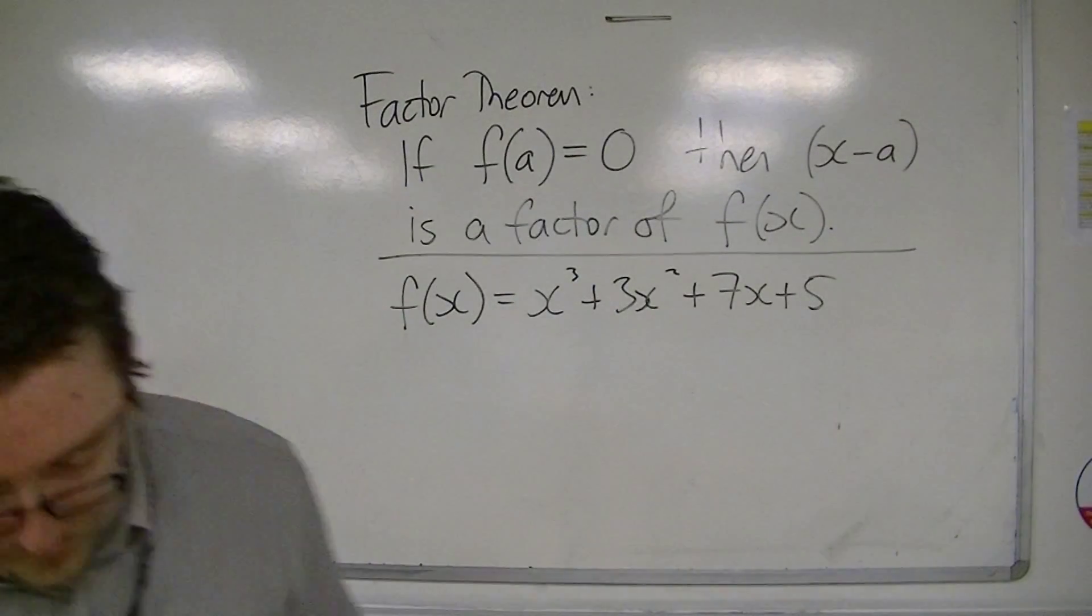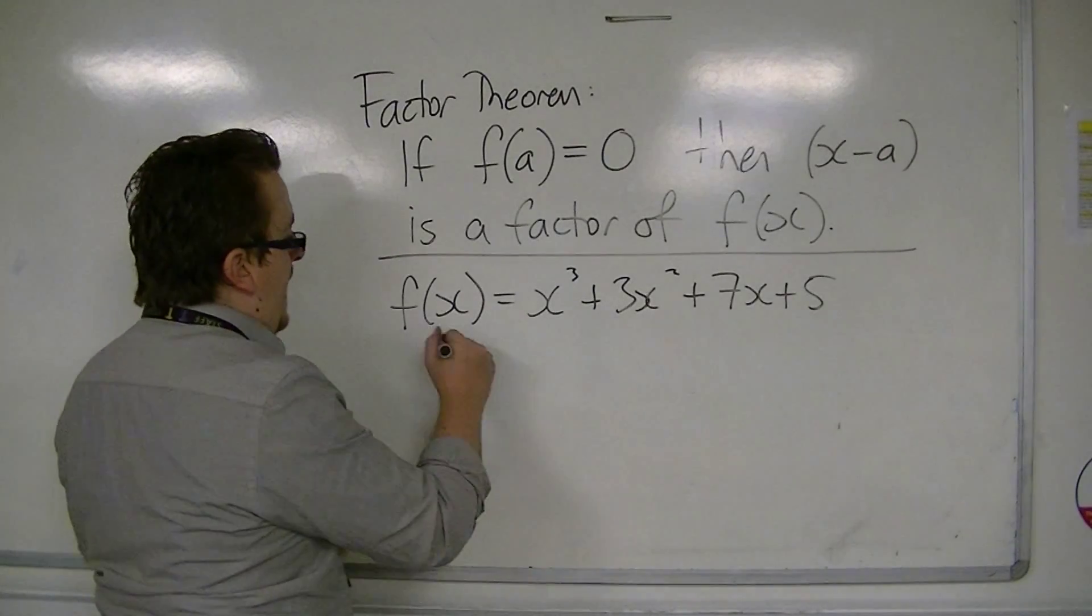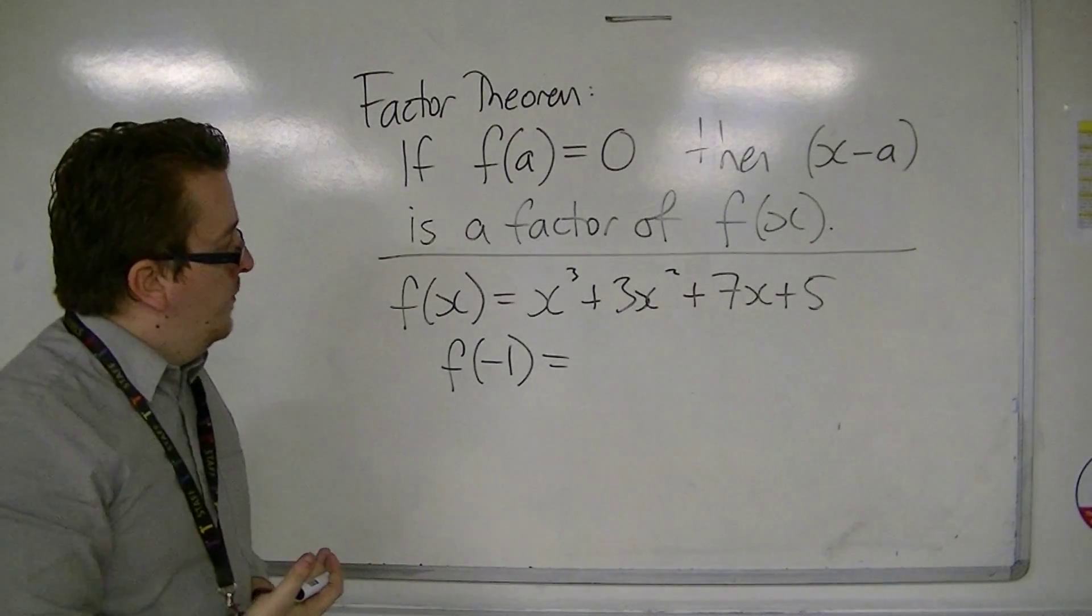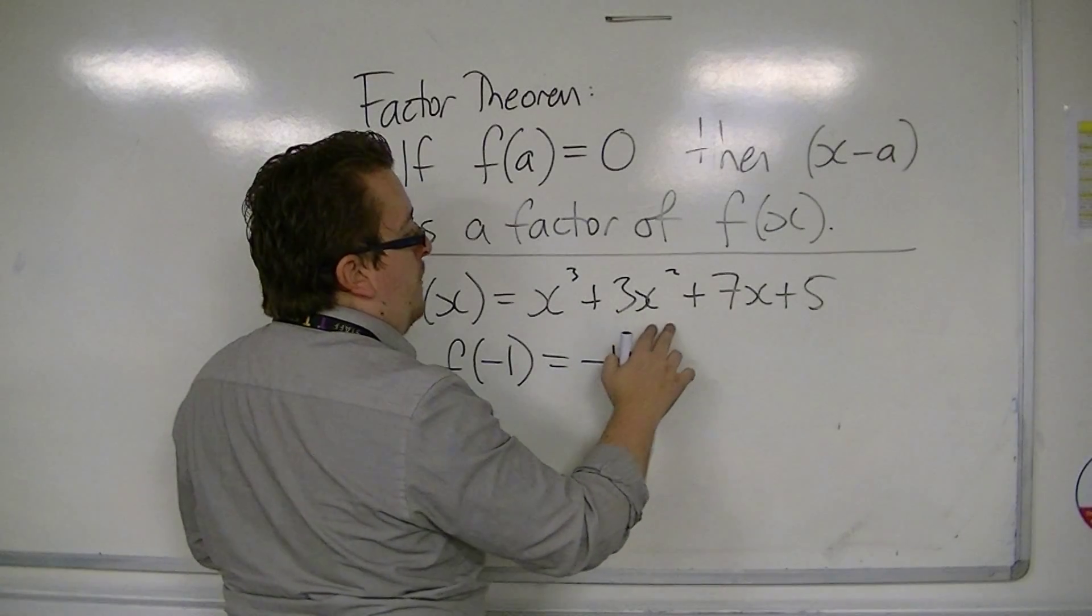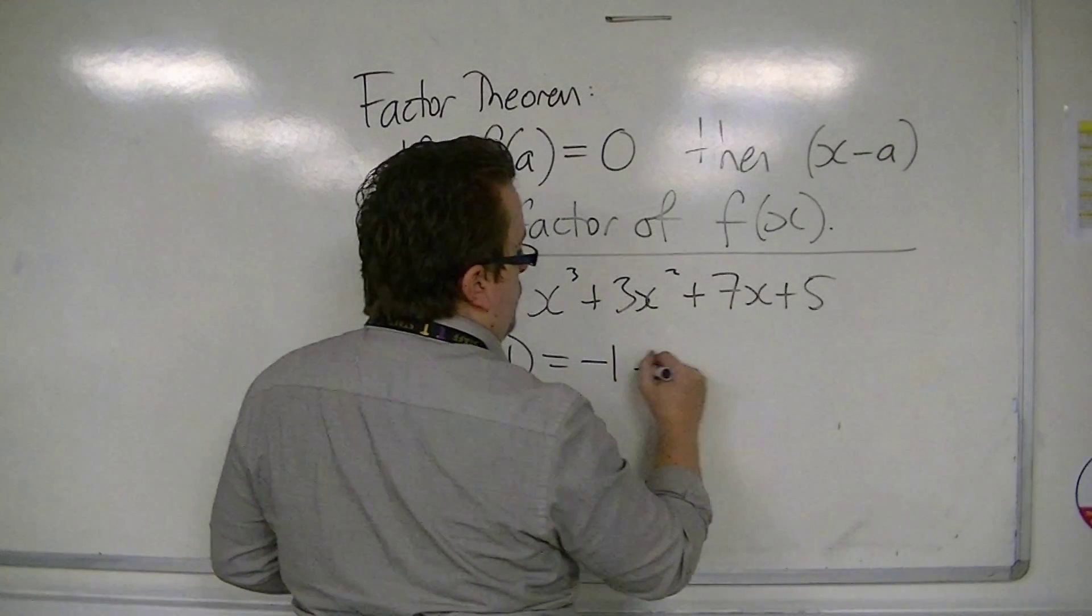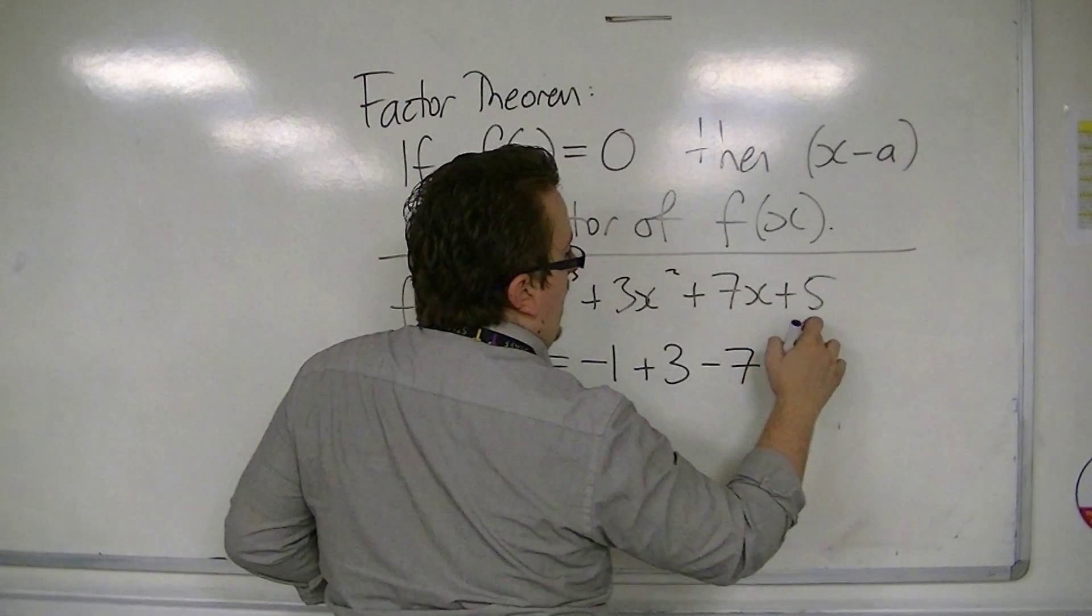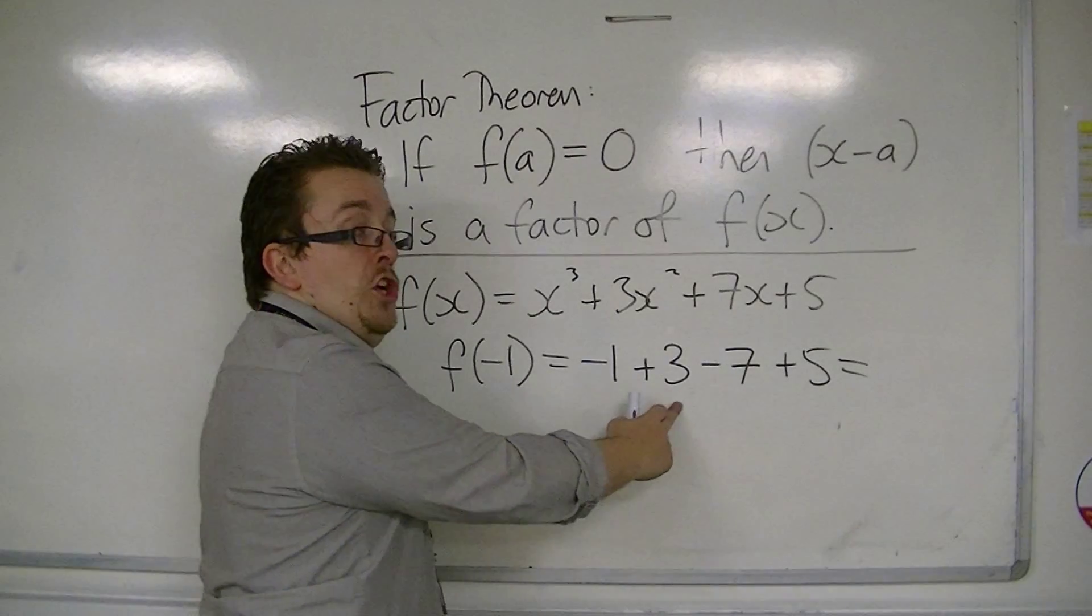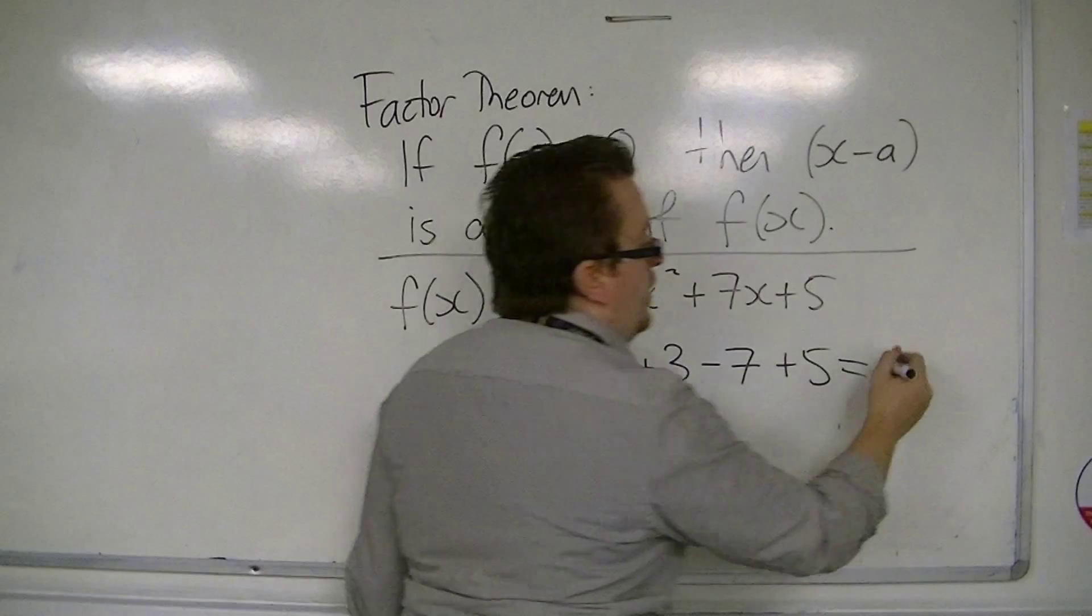And then, if I look at f of minus 1, then minus 1 cubed is minus 1, 3 lots of minus 1 squared is just 3, 7 lots of minus 1 is minus 7, and then we've got that plus 5 on the end. So, minus 1 plus 3 is 2, 2 take away 7 is minus 5, plus 5 is 0.